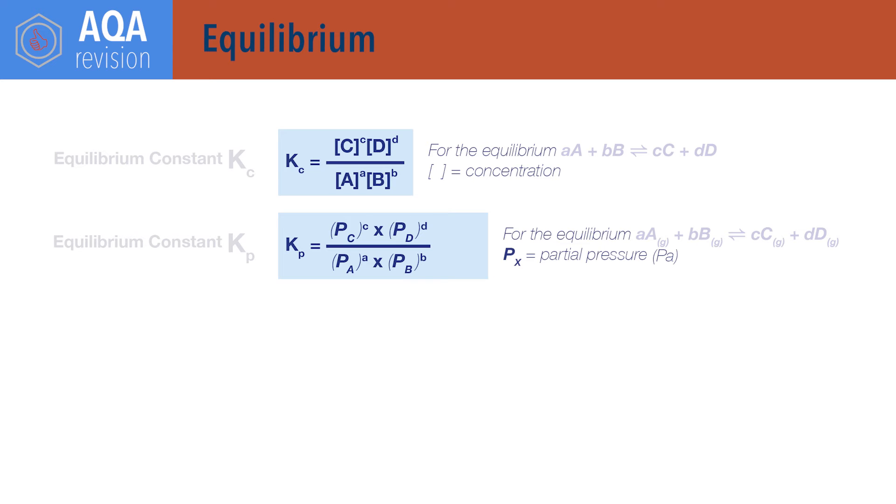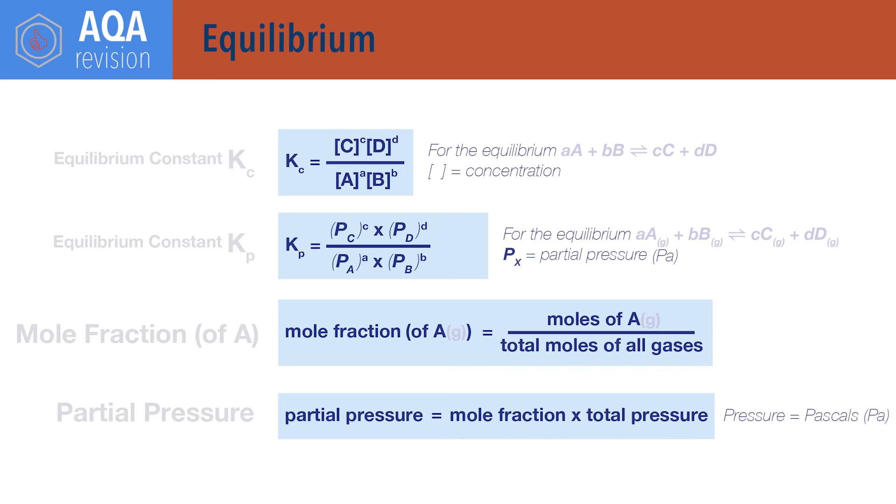Partial pressures have the units of Pa, Pascals. Mole fraction of a gas equals the moles of that gas in the system divided by the total number of all moles of gas in the system. Partial pressure of a gas equals its mole fraction times the total pressure, where pressure is in Pascals.